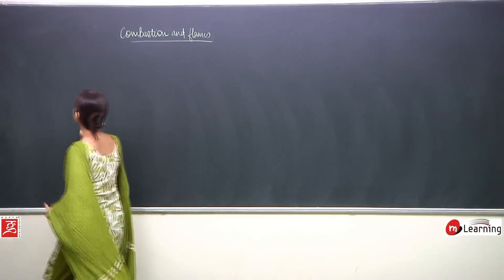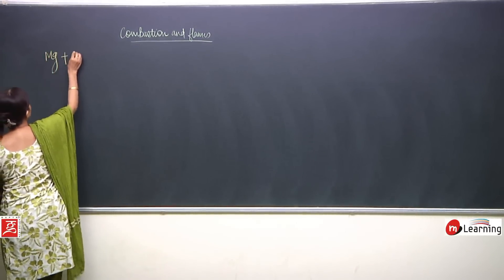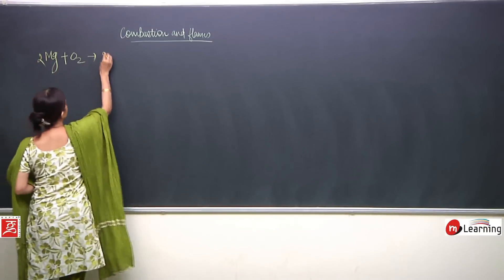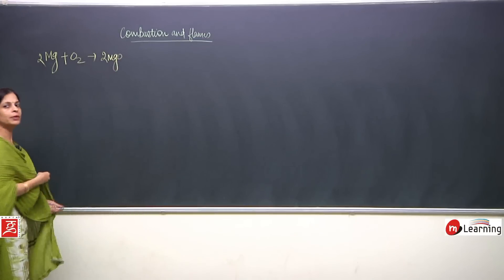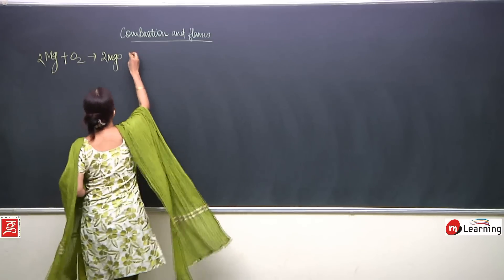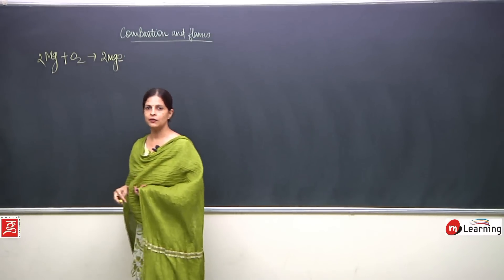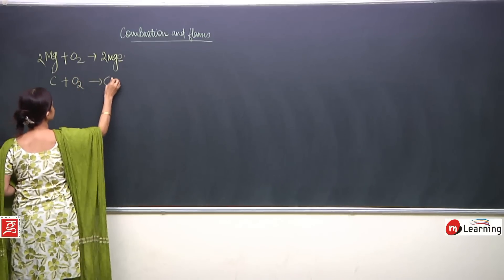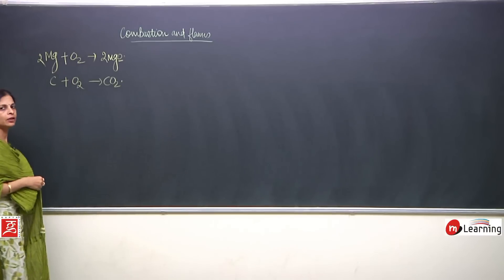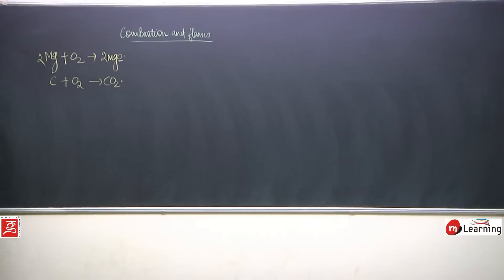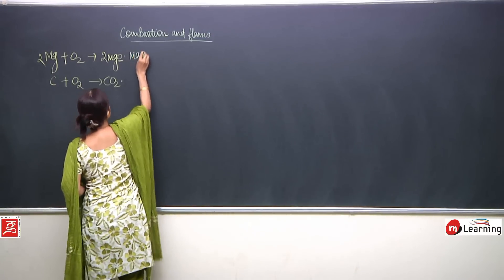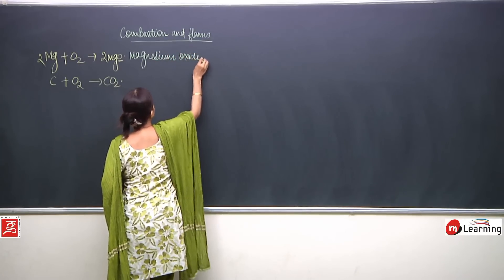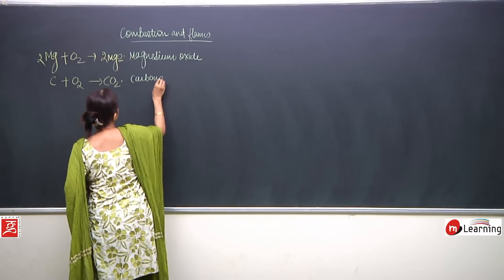Let us look at how a substance undergoes combustion. Take the example of magnesium: when magnesium reacts with oxygen, magnesium oxide is formed. In the same way, when carbon burns, carbon dioxide is formed. So magnesium oxide and carbon dioxide are the products.